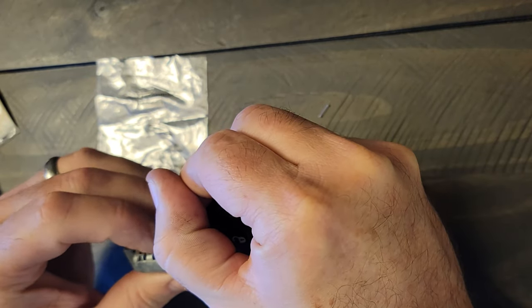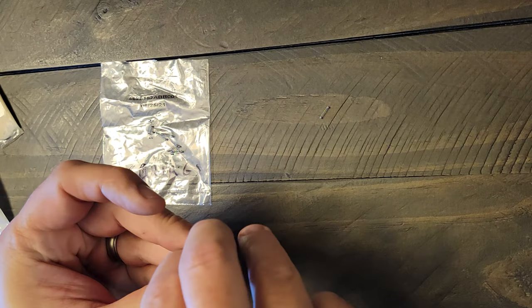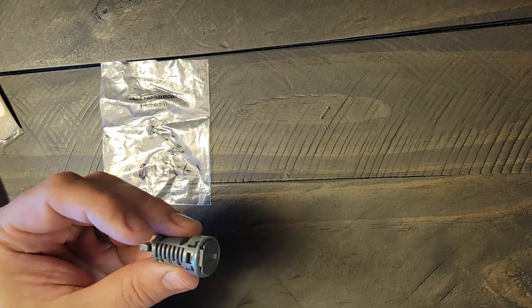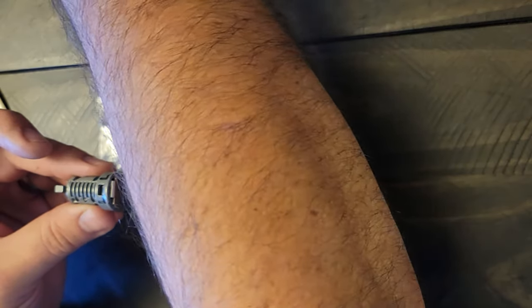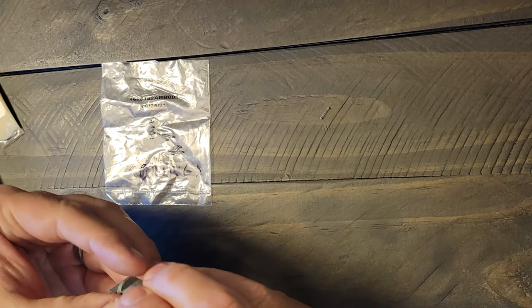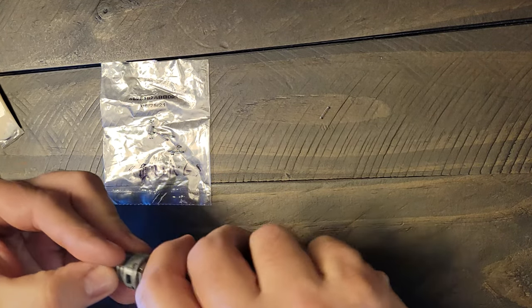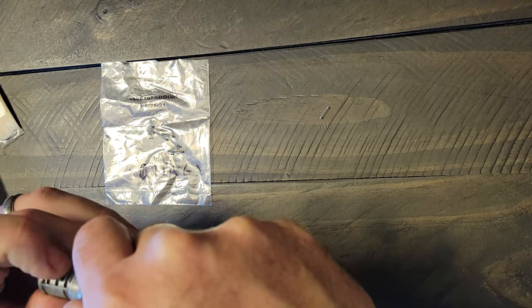You're going to one at a time try A, B, C, D until you find the one that when you insert the key is flush with the outside of the cylinder. You're going to repeat this for the four pins on the right side and then flip it around and follow the same process for the three pins on the left side.